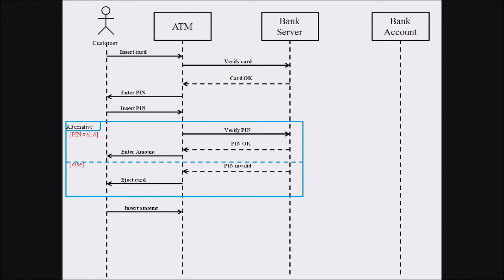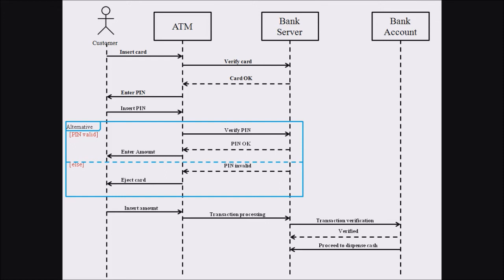If the pin is valid, the customer proceeds by entering the amount. That amount is forwarded from the ATM to the bank server, which communicates with the bank account. The bank account verifies the transaction, proceeding to the dispense cash procedure, and finally the customer receives the cash from the ATM machine. This is the sequence of events in an ATM transaction.